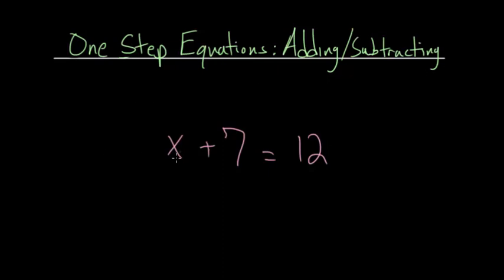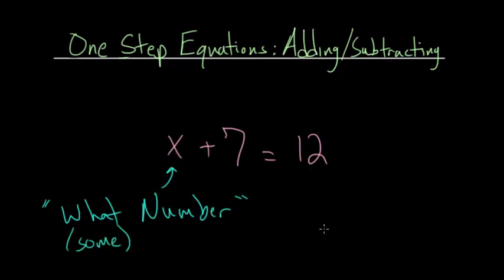We have this equation x plus seven equals 12. The first thing I would recommend doing is trying to make sense of this in English. Whenever you see your variable, you can think of that as what number or some number. So what number plus seven equals 12.